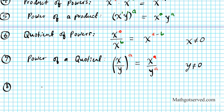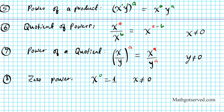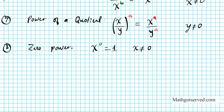Property number eight is the zero power property. The zero power simply means you have x to the zeroth power, and that simply equals 1, as long as x is not equal to zero. So there go all your properties on exponents. We're going to be applying some of these in the examples that we're going to do.